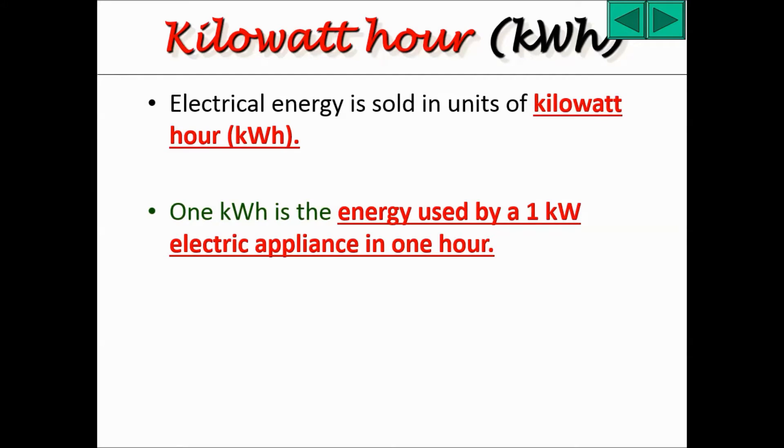What is the kilowatt hour? Electrical energy is sold in units of kilowatt hour, kWh. The kilowatt hour is just another unit for energy. The previous unit that we used was joules. One kilowatt hour is equivalent to 3.6 million joules. One kilowatt hour is the energy used by a 1 kW electrical appliance in one hour.